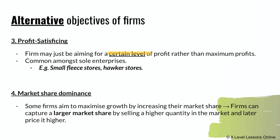Market share dominance is when a firm wants to increase its market share by selling a higher quantity or at a higher price — though higher prices are risky, so firms typically use non-price competition to capture more market share. Apple and Samsung are classic examples. Market share dominance is particularly prominent among monopolies and oligopolies.